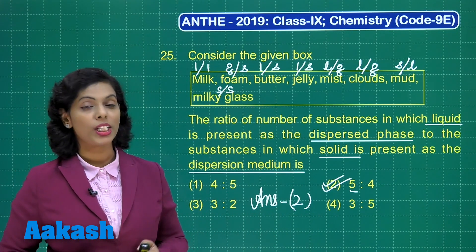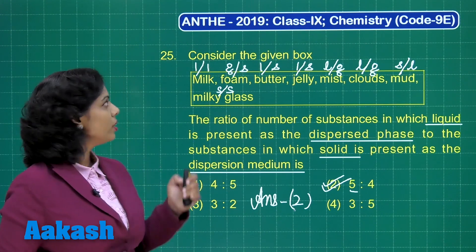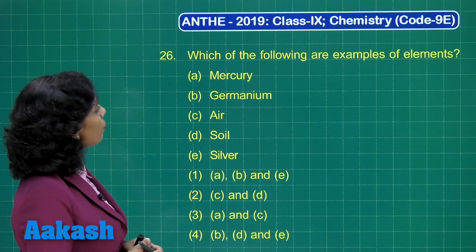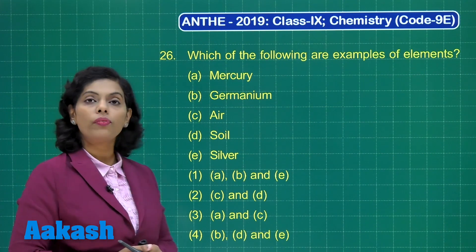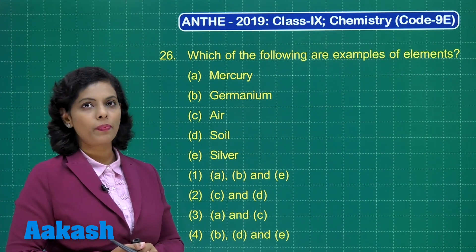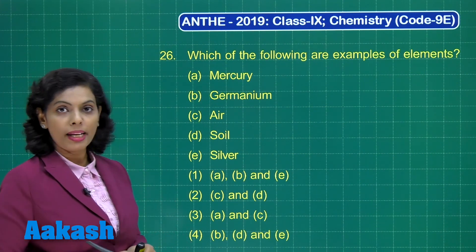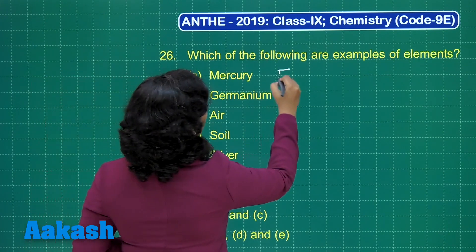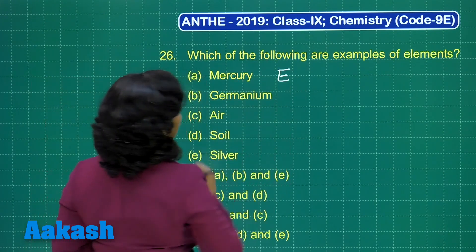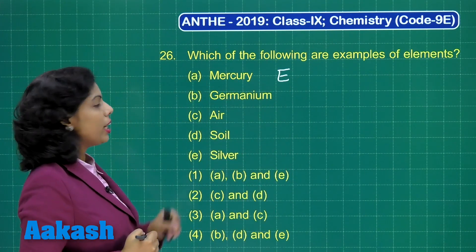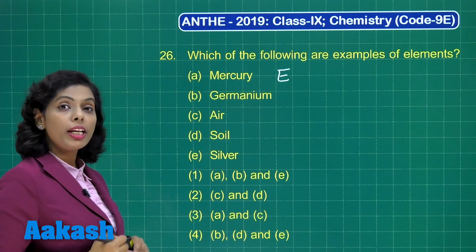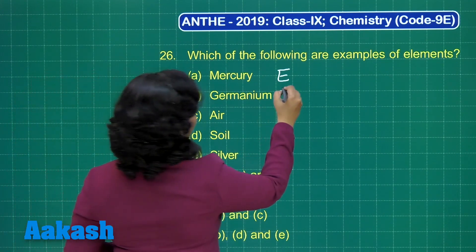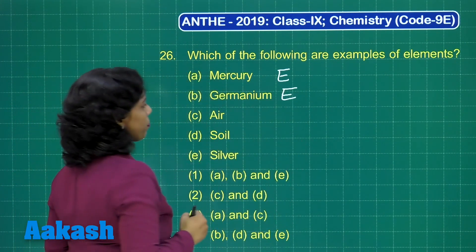Now the turn is there for question number 26: which of the following are examples of elements? If I talk about mercury, that's a metal and that's why it's an element. Germanium is a metalloid, but still it's an element.